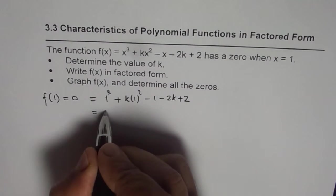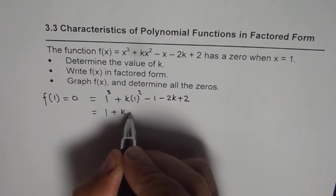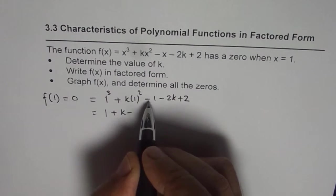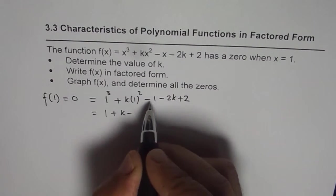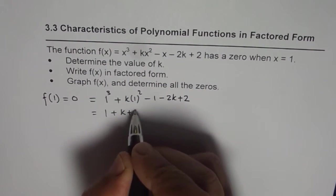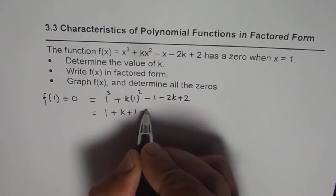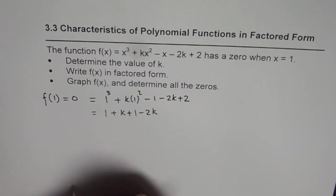So we have this as 1 plus k minus 1 plus 2. Let me write here. Minus 1 plus 2 is plus 1, and then we have minus 2k.